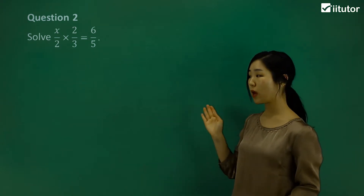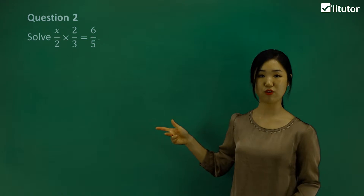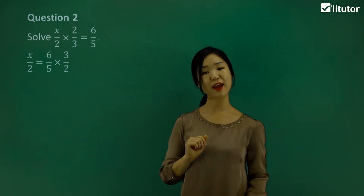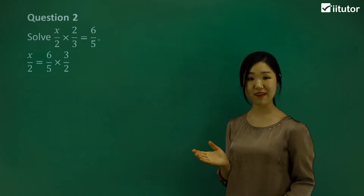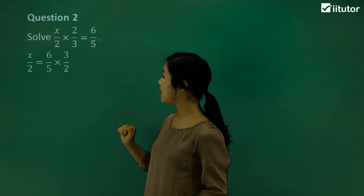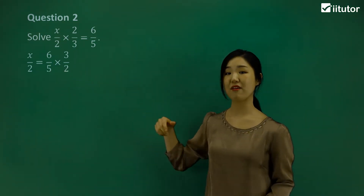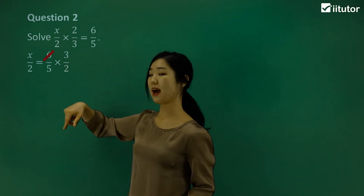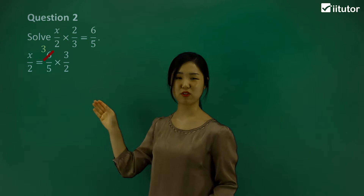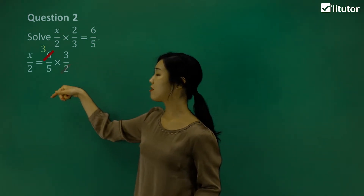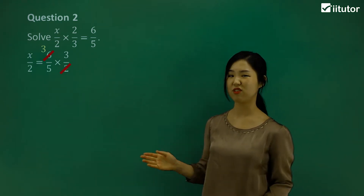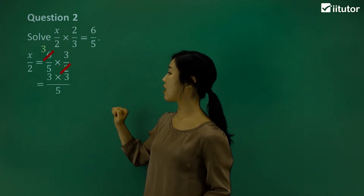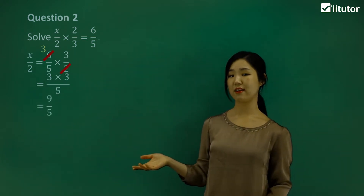When we divide by 2 over 3, we change it to a multiply and reciprocate the 2 over 3, so it becomes 3 over 2 that we multiply to the other side. Before we do any multiplication, we can see some common factors to simplify. The 6 on the numerator and 2 on the denominator have common factors of 2. Let's cross the 6 out — 6 divided by 2 is 3, so replace it with 3. Cross the 2 out — 2 divided by 2 is 1, so it's just gone. Now multiply the numerators: 3 times 3, and the denominator is just 5. 3 times 3 is 9, so we simplify to 9 over 5.